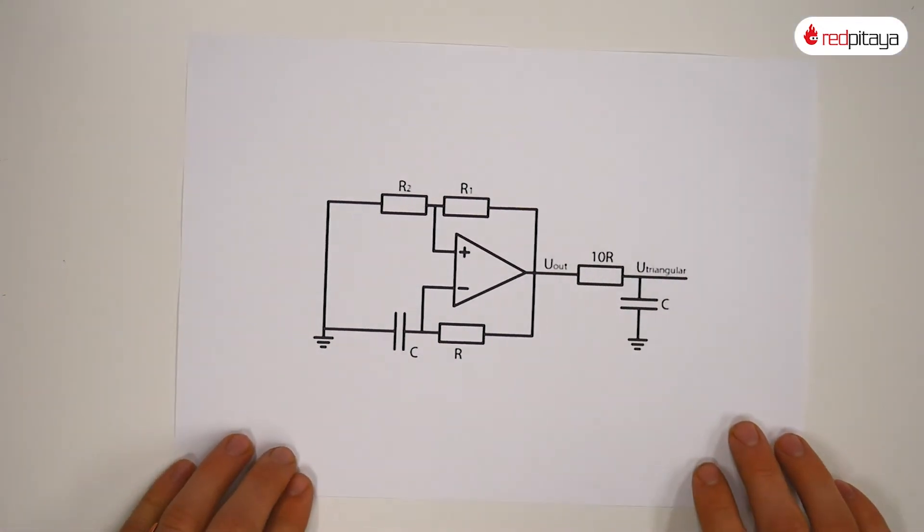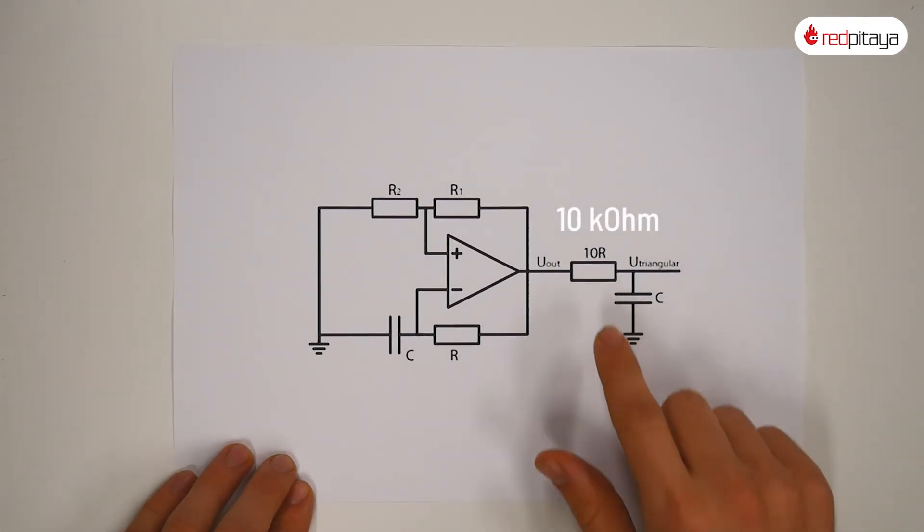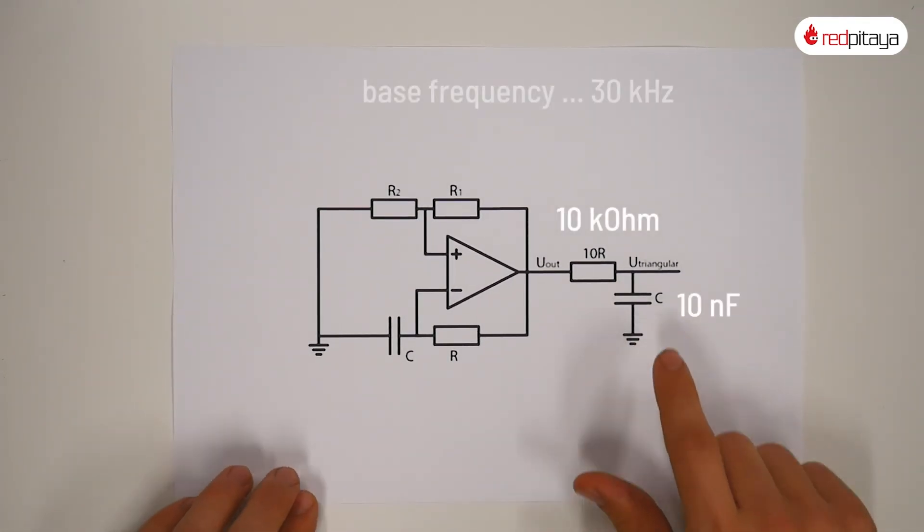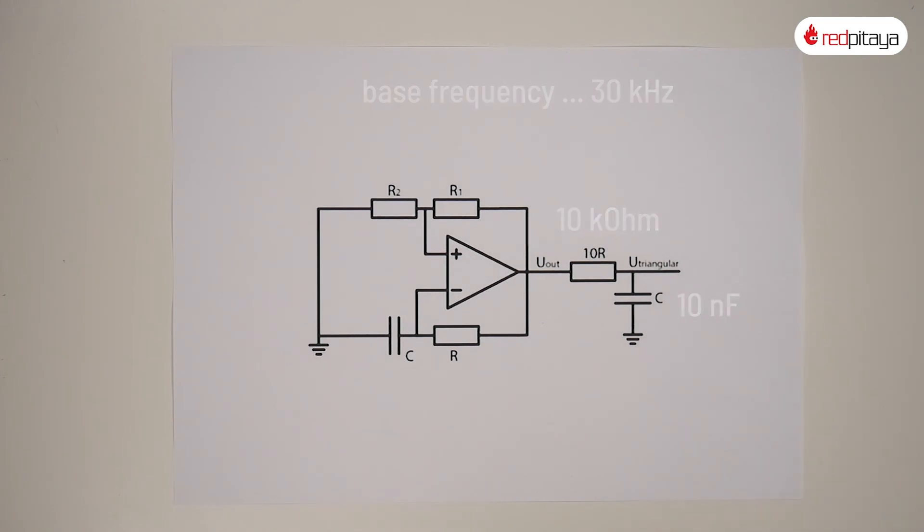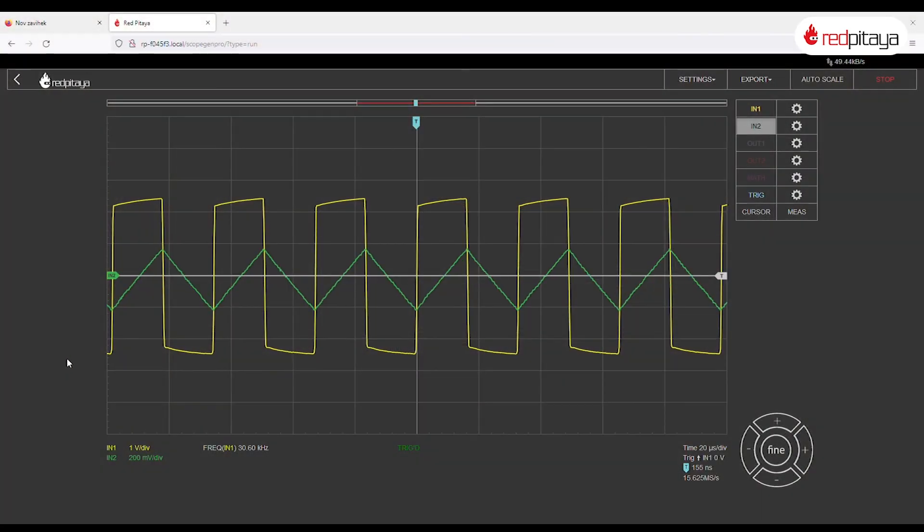That is a checkmark on sine wave generators. I would also like to show you a triangular wave generator — because it's very simple. All you need is an RC filter connected to the output, and if the time constant is significantly greater than the oscillator's period, we get a triangular signal. Here is a proof with a 10 kΩ resistor and a 10 nF capacitor at a base frequency of 30 kHz. Here is the resulting triangular waveform.